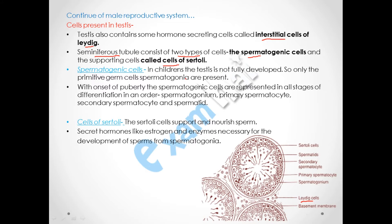In children, the testes are not fully developed, so only primitive germ cells called spermatogonia are present. With the onset of puberty, the spermatogenic cells undergo differentiation in order: first spermatogonium, then primary spermatocyte, then secondary spermatocyte, and then spermatid. The spermatid is the actual sperm cell. We will discuss this order in detail later.